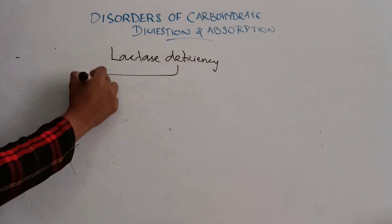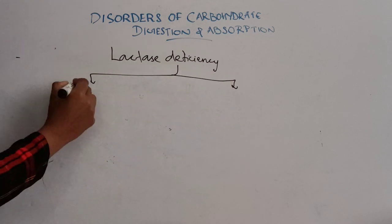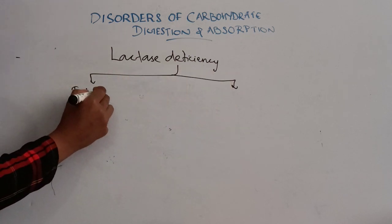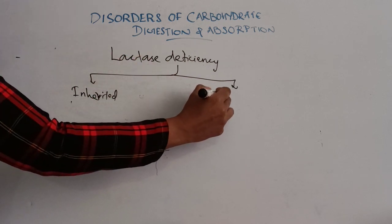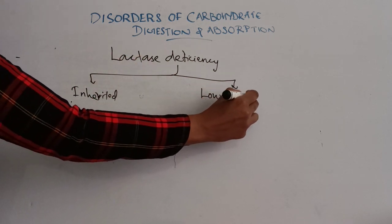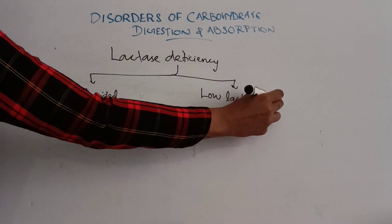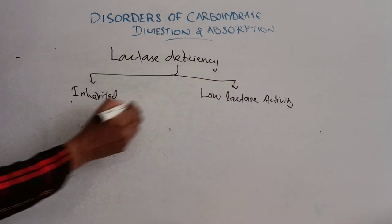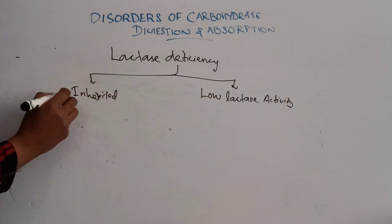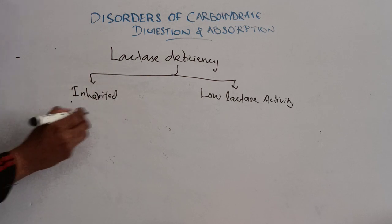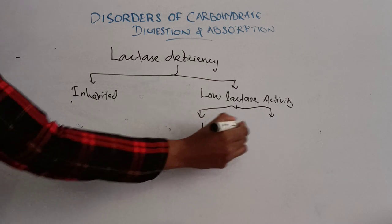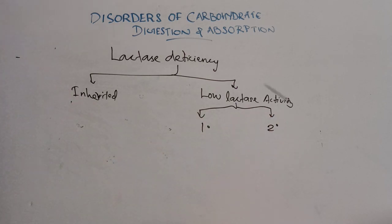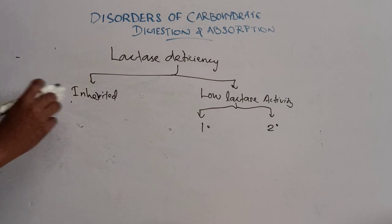Lactase deficiency can be of two types: the first one is inherited, and the next one is low lactase activity. Low lactase activity is again further divided into primary and secondary.